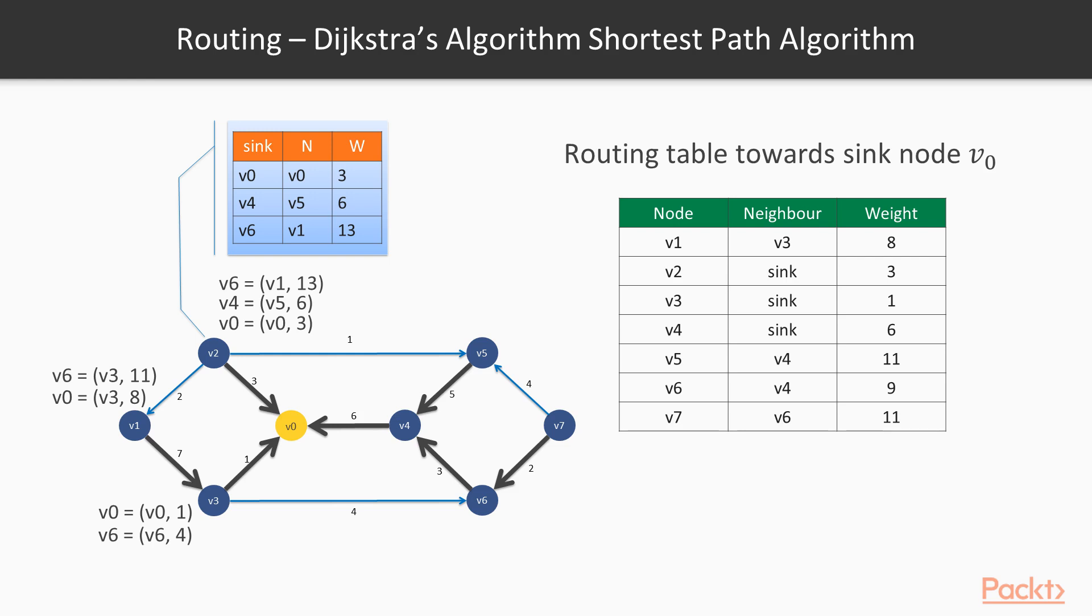If you look at the routing table for node v2 to v6, let's say a packet is coming to v2 which is destined for v6, then v2 knows that I need to forward this packet to v1. The total weight of this whole route will be 13, so 2 plus 7 plus 4 makes 13. In the same way, all of the other nodes construct their routing table.